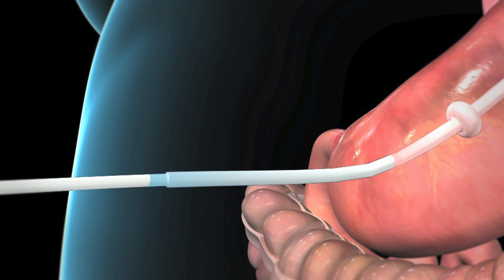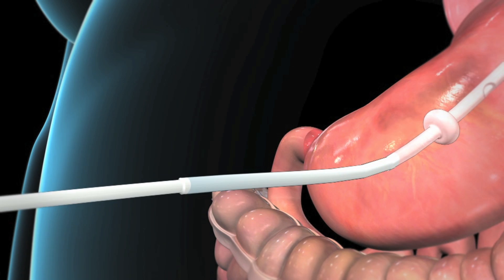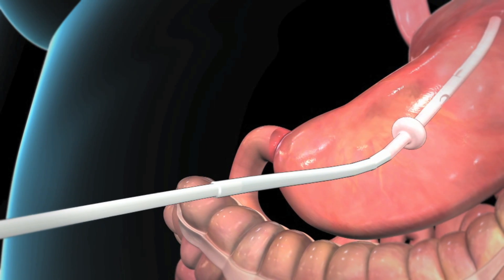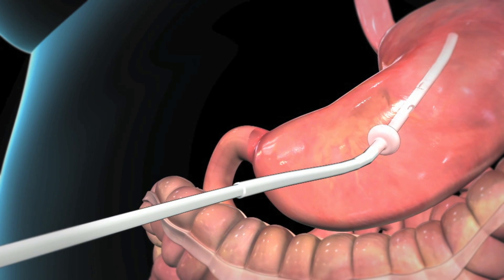Your doctor will continue to pull until the tip of the tube comes through a small, one-centimeter incision in your abdominal skin.